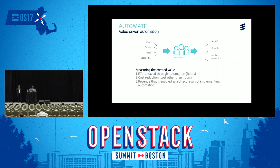Let's see what value automation gives to known state. It can marginally reduce costs by saving a lot of time in deployments, and it gives better software quality with high precision and accuracy. We can easily speed up delivery across multiple sites using automation, empowering us to utilize our full capabilities. This gives a good margin, rapid growth, and market protection.